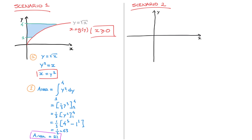The function we'll be considering this time is y equals ln of x plus one. The curve passes through the origin. Now let's say we need to calculate the area enclosed by this curve and the y-axis for y values between negative one and one. That corresponds to this enclosed area and this enclosed area down here. So the enclosed area is made up of two parts: one on the right-hand side and one on the left-hand side of the y-axis, both split at the origin where x equals zero and y equals zero.